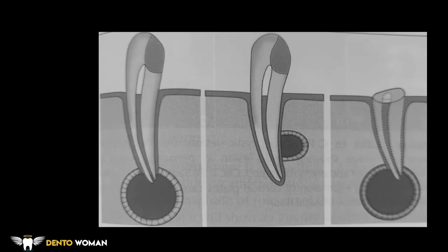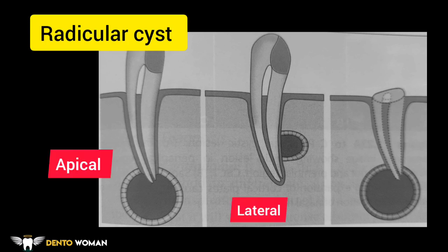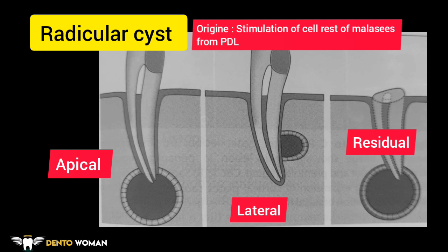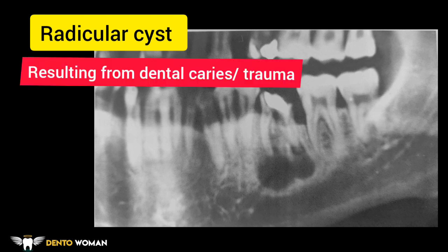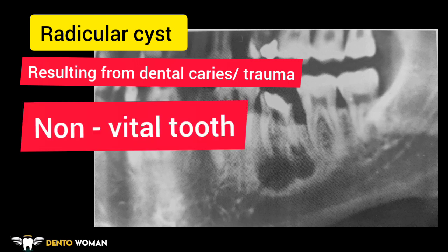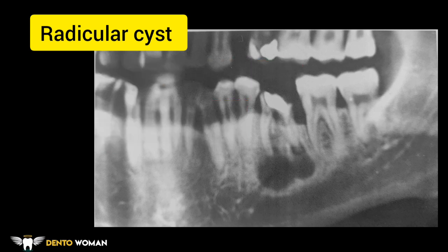Here is the schematic representation of apical, lateral, and residual radicular cysts. The radicular cyst results when epithelial cell rests of Malassez in the periodontal ligament are stimulated to proliferate and undergo cystic degeneration. This cropped panoramic shows a well-defined radiolucency associated with the lower first molar with corticated margins and loss of lamina dura, which is an infected radicular cyst. It appears as a round or pear-shaped radiolucency resulting from dental caries or trauma in association with a non-vital tooth, with the epicenter usually located approximately at the apex. Radiolucency is usually more than 1.5 cm but less than 3 cm in diameter.